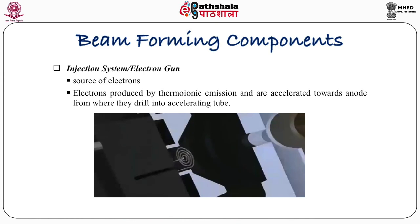The injection system, or electron gun, is the source of electrons. Electrons are produced by thermionic emission and are accelerated towards the anode, from where they drift into the accelerating tube. This is the simple structure of the electron gun. Thermionic emission is produced by giving some voltage and current, and electrons come out. They are accelerated by the anode and approximately 50 keV energy electrons are generated from this electron gun, then injected into the accelerating microwave power source.